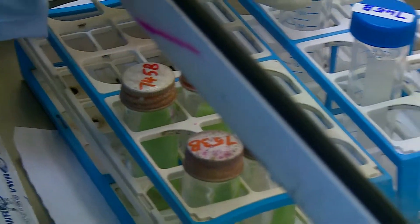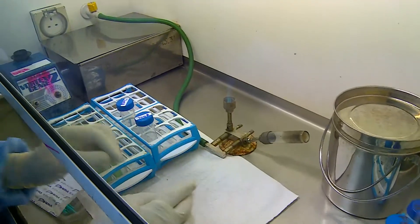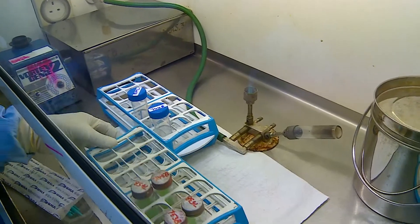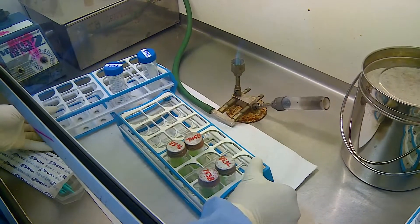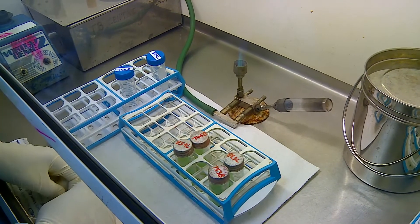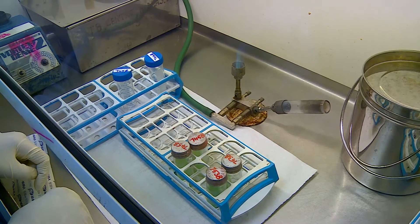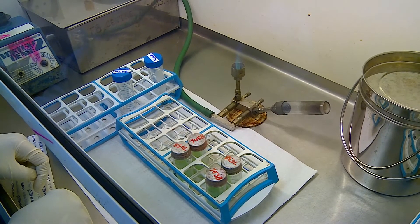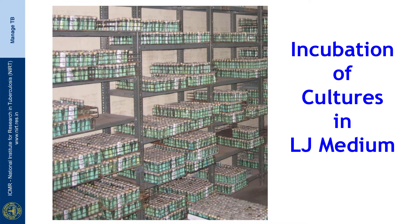After inoculating 2 slopes per specimen, the slopes can be incubated. We use 2 slopes per specimen because even in case one is contaminated, the other slope will be available for recording the final growth. The slopes are incubated at 37°C for about 8 weeks.